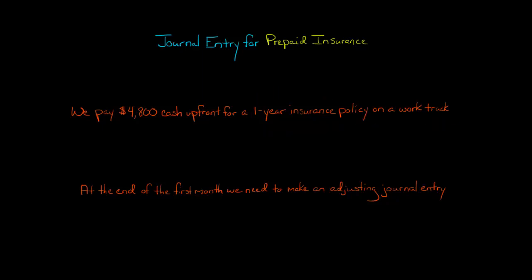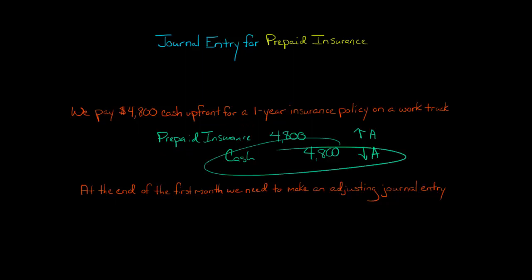So we're paying out $4,800 of cash, so cash is going to be credited. We're going to credit cash for $4,800, but then we need to debit something for $4,800, and we're going to debit prepaid insurance. This is an asset account — one asset, cash, is going down, but we're acquiring another asset in exchange, so assets are going up. Total assets still equal liabilities plus equity.